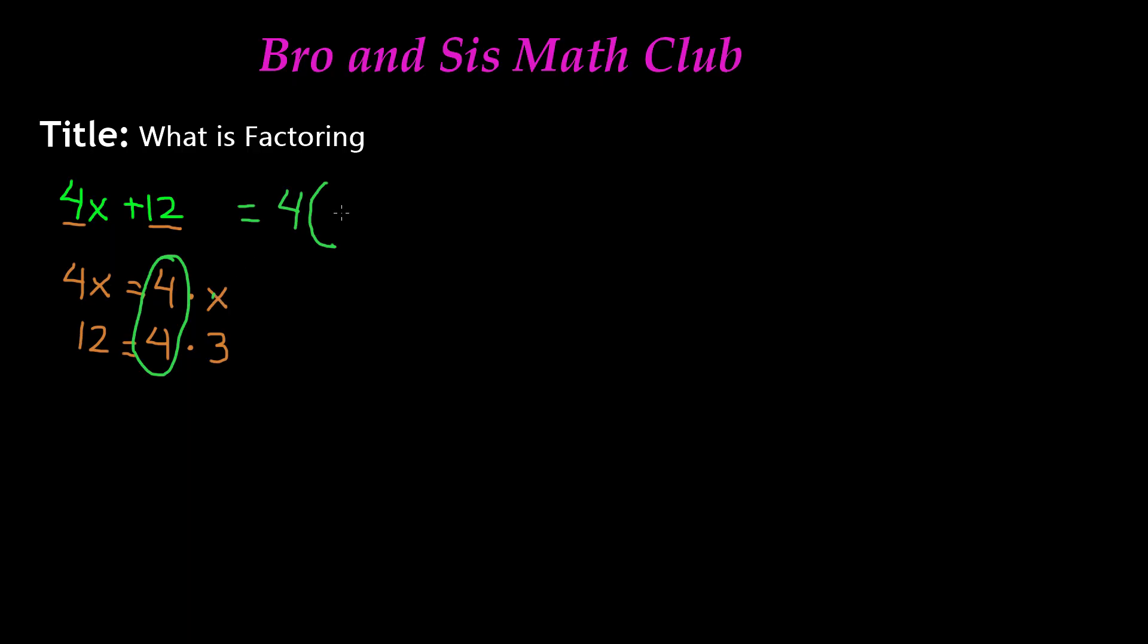So if I put a parenthesis and then write x and then plus 3 and close it in, this is the same thing as 4x plus 12. Now, I got 4 from the factor, x plus 3. Now, the reason I put an addition sign is because in my original problem, I have an addition sign. So that's where I get the addition sign from.